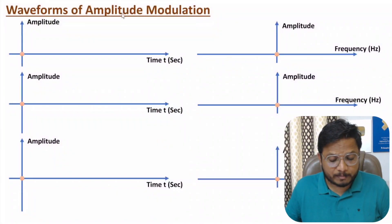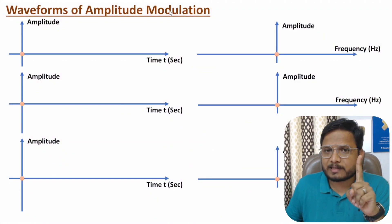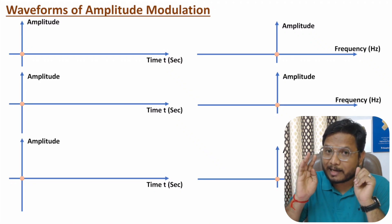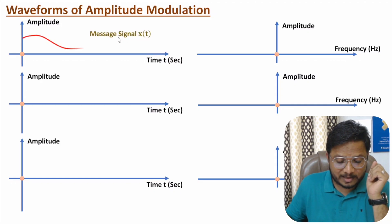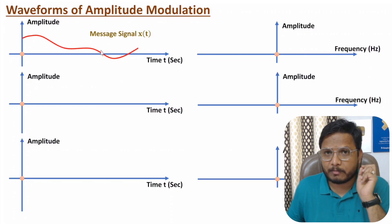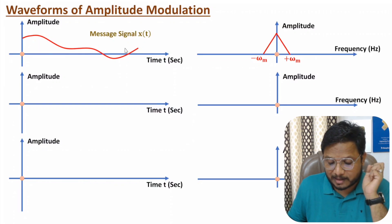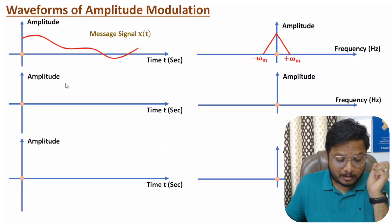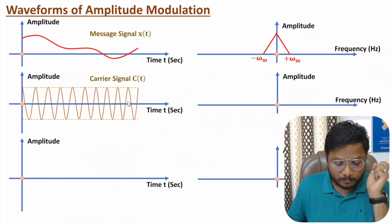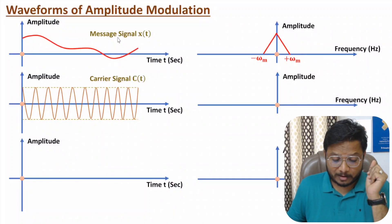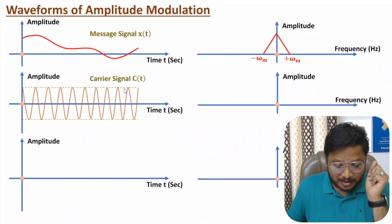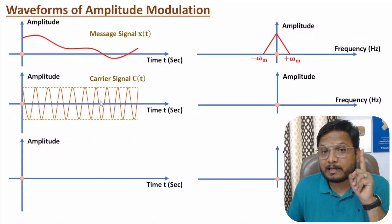Let me explain the waveforms of amplitude modulation. We have a low frequency message signal that we will be converting into a high frequency signal based on the carrier signal. Here we have a low frequency message signal — you can observe it has a highest frequency omega m. In its frequency response, I have represented it by a triangular pattern, with plus and minus omega m, meaning the bandwidth of this message signal is omega m. Now let me plot the carrier signal, which is a high frequency sinusoidal signal. This carrier signal's amplitude will change with respect to the message signal in the modulated signal.